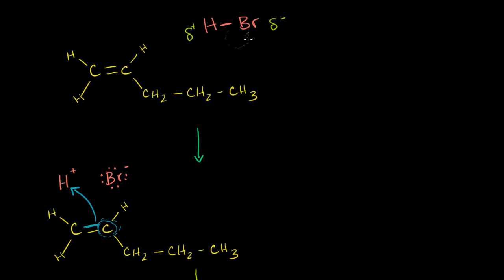In the last video, we started with hydrogen bromide and pent-1-ene, and we reasoned through a reaction mechanism. Bromine is much more electronegative than hydrogen. There's a partial negative charge, but maybe it takes hydrogen's electron altogether.